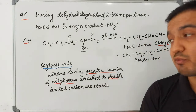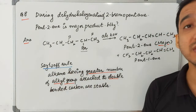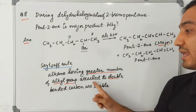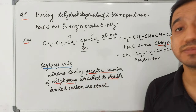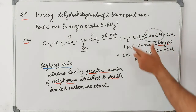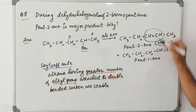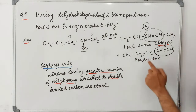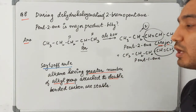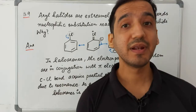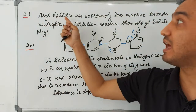Pent-2-ene is the major product according to Saytzeff's rule, which states that the alkene having the greater number of alkyl groups attached to doubly bonded carbon atoms is more stable. Pent-2-ene has two alkyl groups attached to the double-bonded carbons, while pent-1-ene has only one — so pent-2-ene is the more stable product.